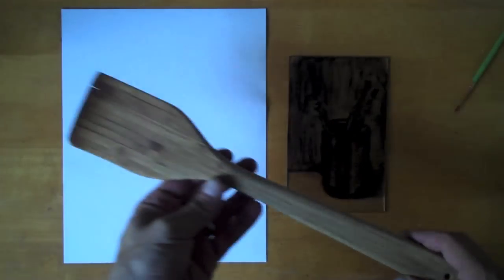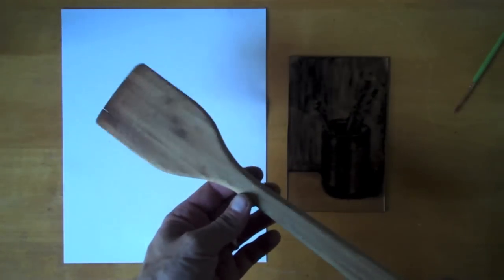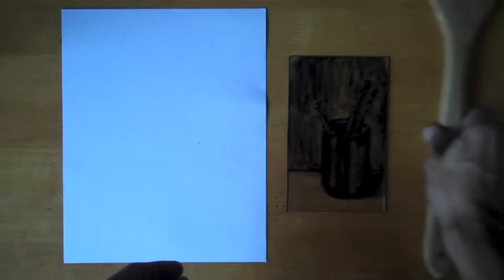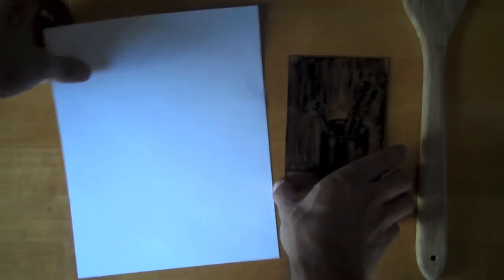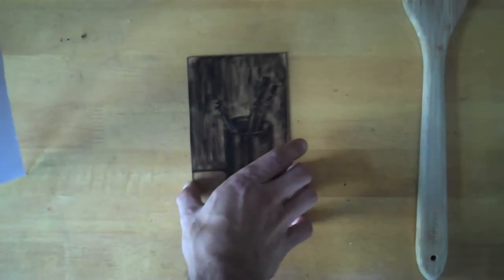To make my print, I'm using 140lb watercolor paper that's been soaked in water and a wooden spoon. The paper has been blotted so that any excess water has been removed and it's simply damp.